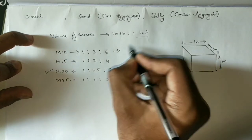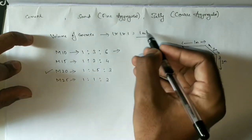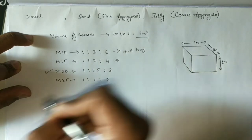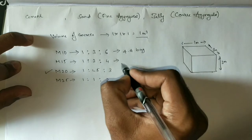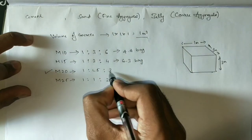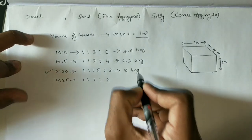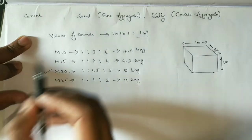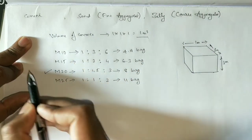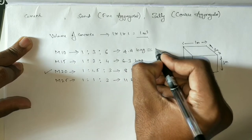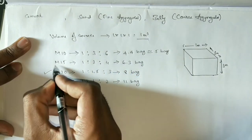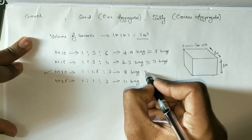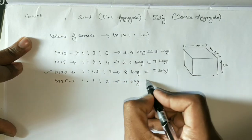So for one cubic meter: M10 grade requires 4.4 bags of cement, M15 grade requires 6.3 bags, M20 grade requires 8 bags, and M25 grade requires 11 bags.